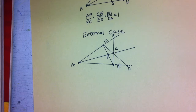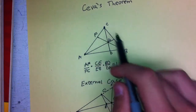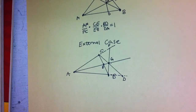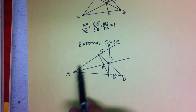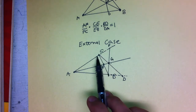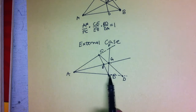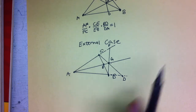So we can no longer just go around the triangle like we did in the internal case, just multiplying and dividing. Instead, we're going to start at the same point — point A — but this time when we go around, we're going to go from the point to the intersection point, and then back to the second point. Then from the point to the intersection point to the next point, and then from the point to the intersection point back to the original point.